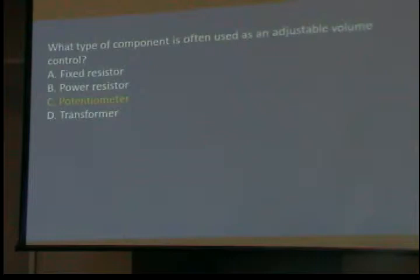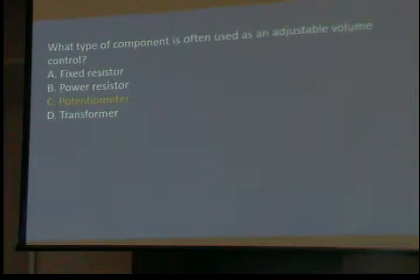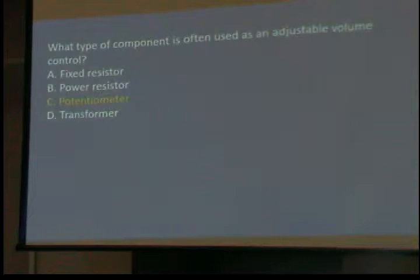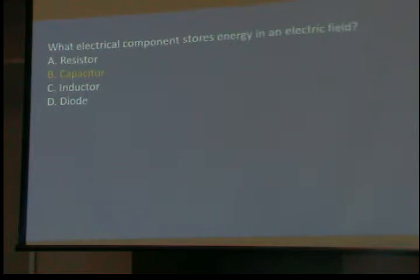What type of component is often used as an adjustable volume control? It's called a potentiometer — the thing you turn when you adjust the volume on a radio. It changes the potential. Although if you look at the word it would seem like it measures potential, but it's not — it's an adjustable volume control. What electrical parameter does it control? Resistance. A potentiometer is really a resistor whose value you can vary up and down.